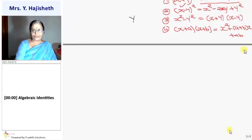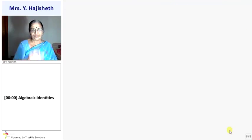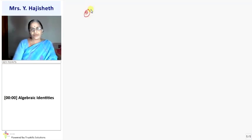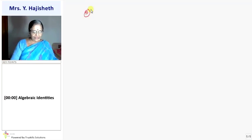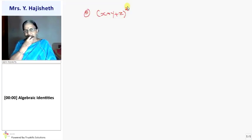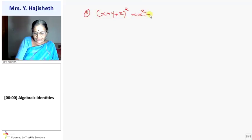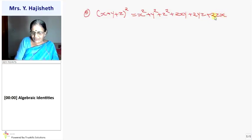Now, some more formulas — the standard 9 formulas. Fifth formula: instead of binomial, suppose you are asked to write the expansion of a trinomial. The formula is: x squared plus y squared plus z squared, plus two times first into second, plus two times second into third, plus two times third into first — that is x squared plus y squared plus z squared plus 2xy plus 2yz plus 2zx.